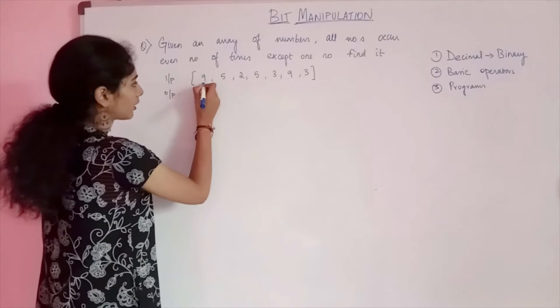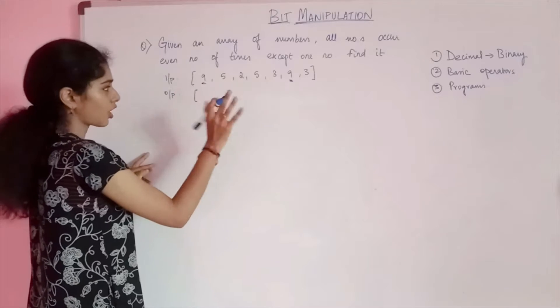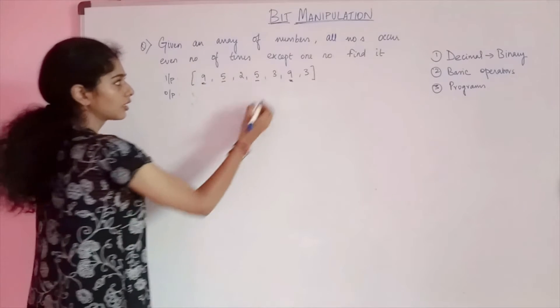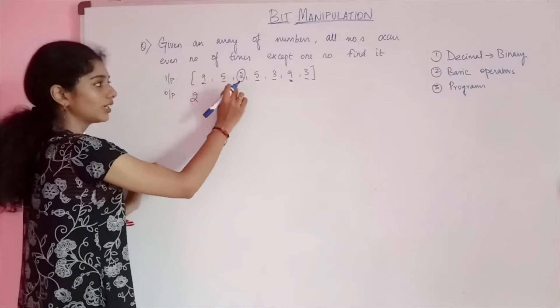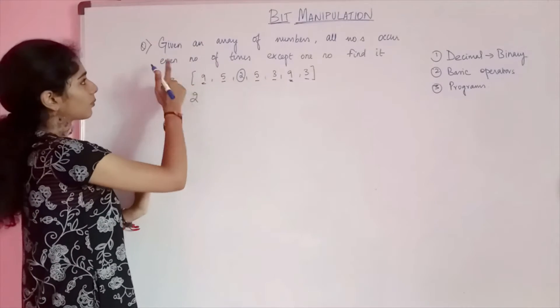Here, 9 is occurring one more time, so it's occurring even number of times. It's not 9. But 5 is also occurring another time. 3 is also occurring another time. So the output shall be 2, because it's the only number that is occurring an odd number of times.